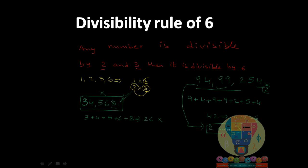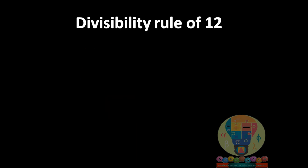So if a number is divisible by 2 and 3, it is divisible by 6 — very simple. Now let's see another rule for another number, like 15. But before that, let's look at the divisibility rule of 12. When we list the factors of 12: 1×12, 2×6, 3×4. We don't take 1 and 12.